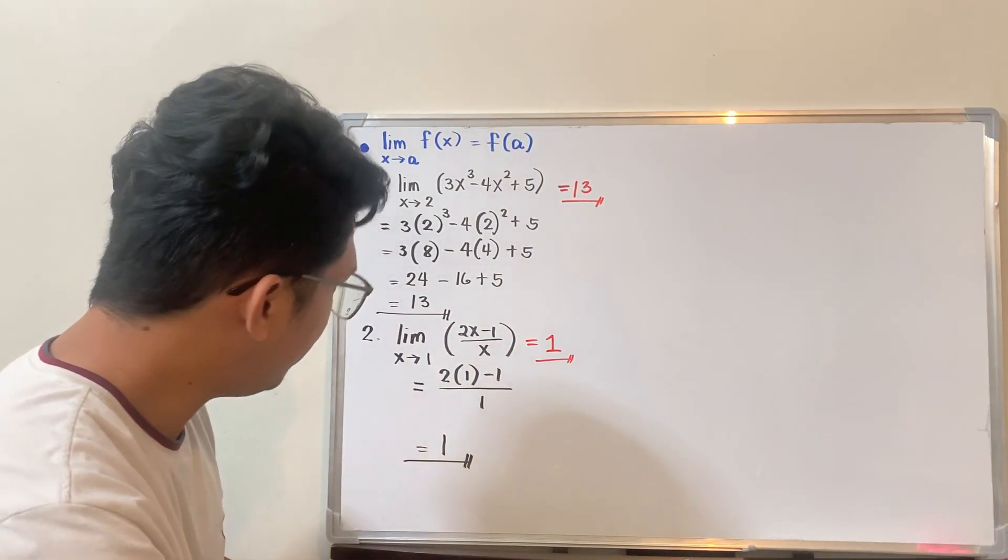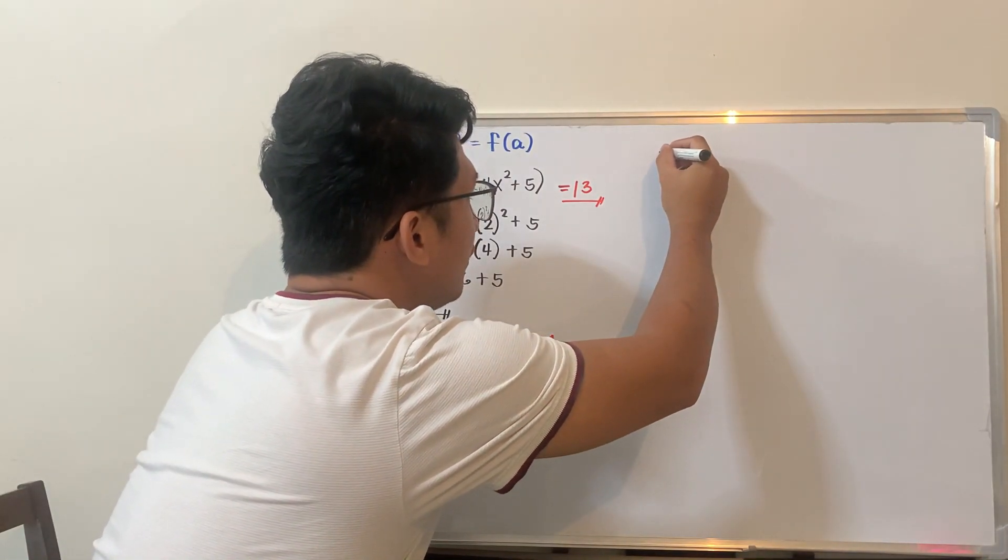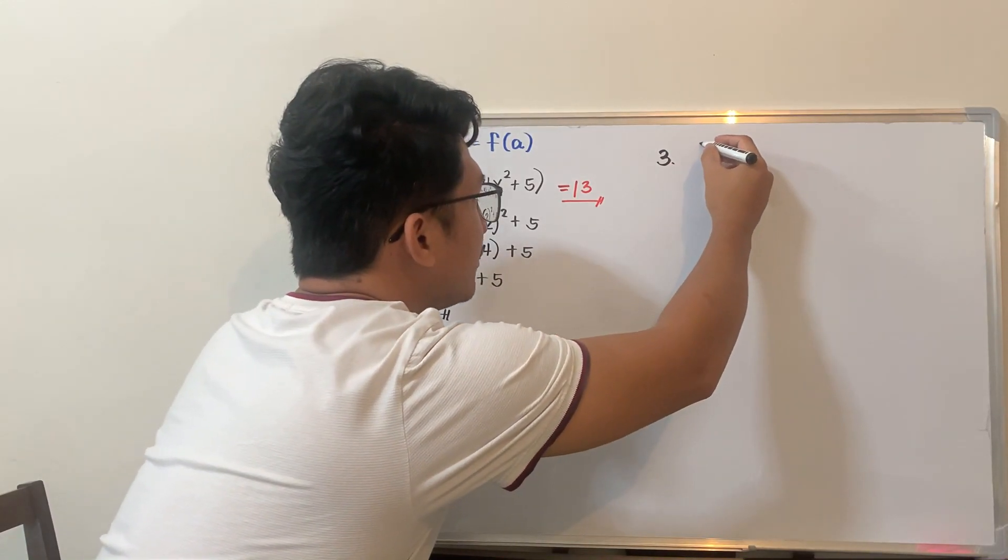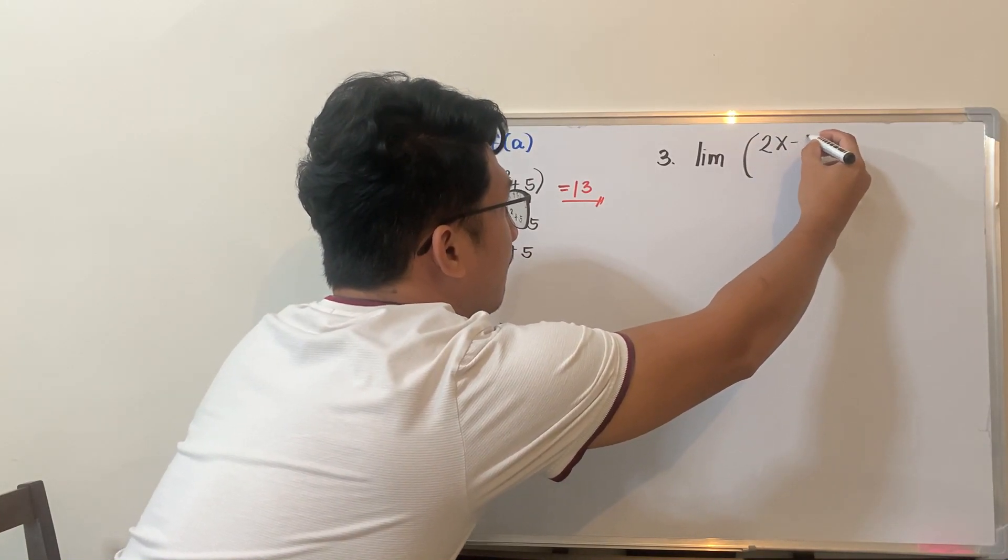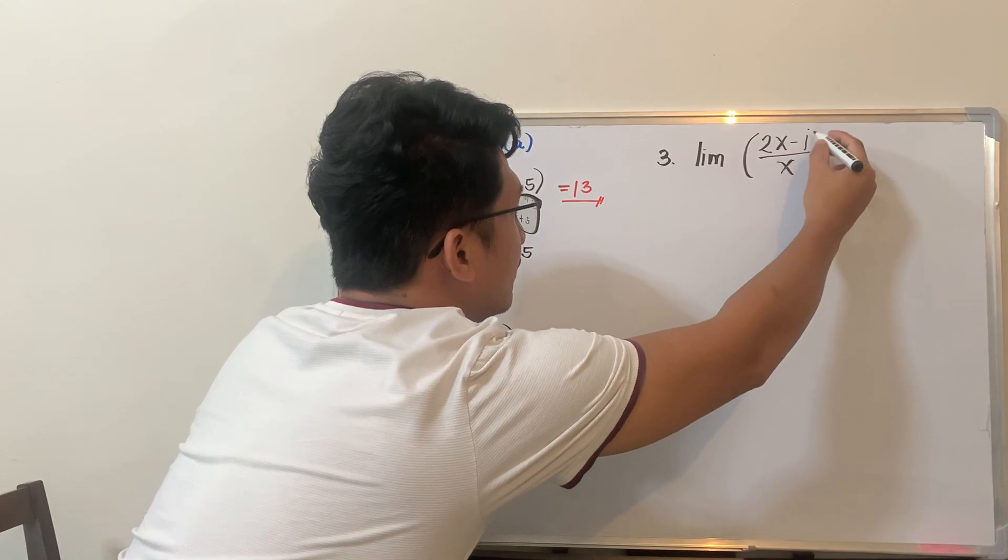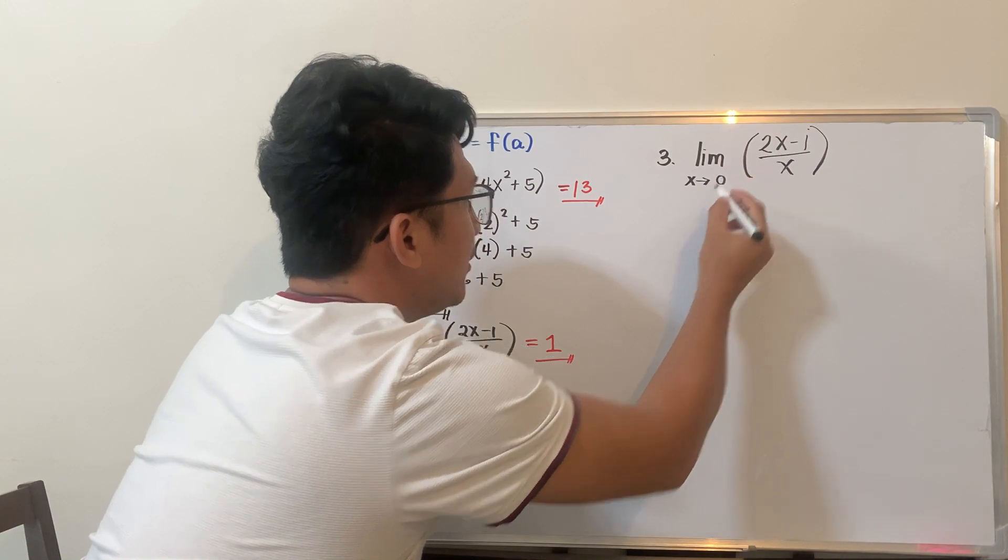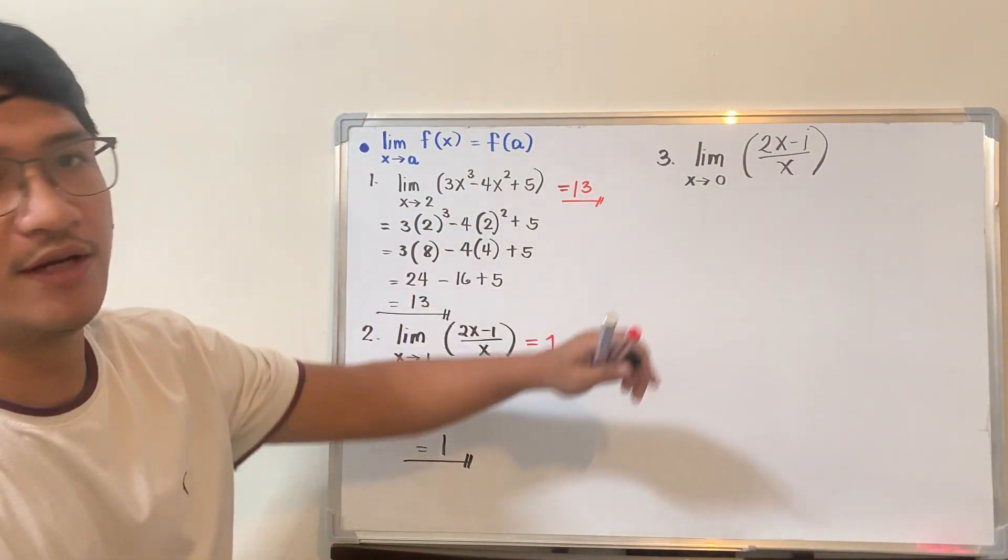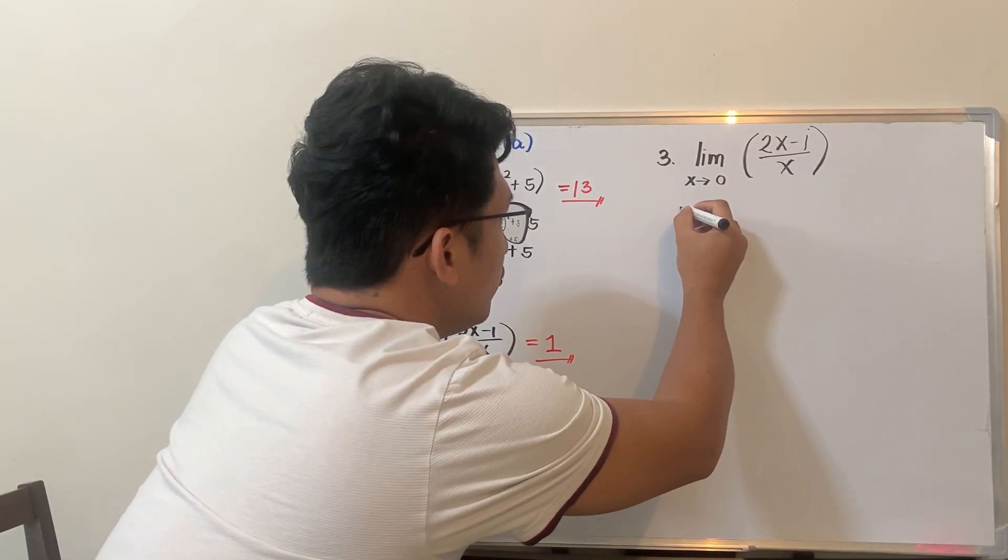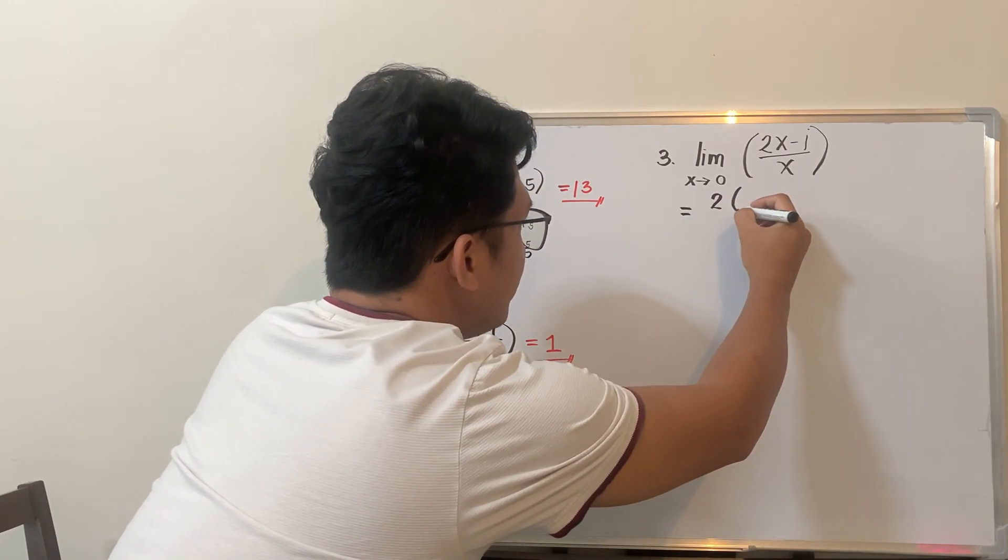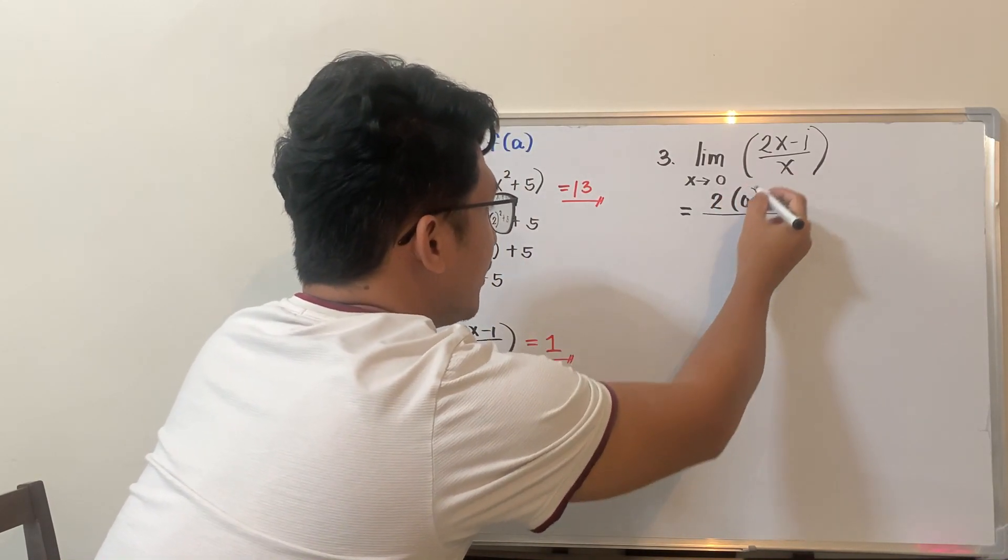Now, if we change the limit, we change the value of a, for example. So what if you are to solve this one, the limit of 2x minus 1 all over x, as x approaches 0. So instead of 1, let's have 0 this time. Now, when you substitute, you will come up with 2 times 0 minus 1 all over, of course, 0.